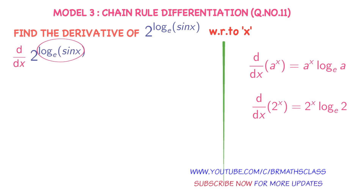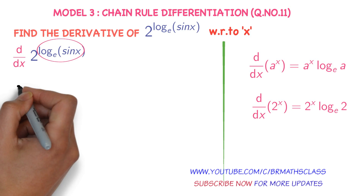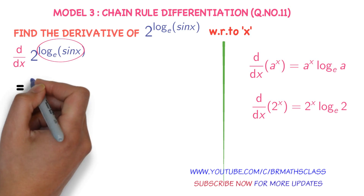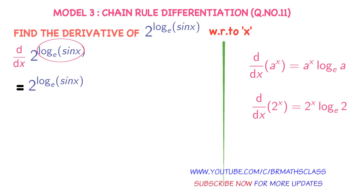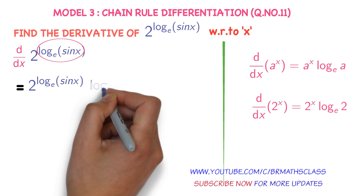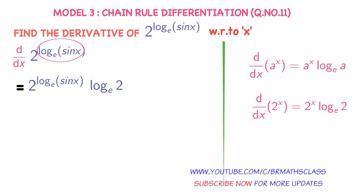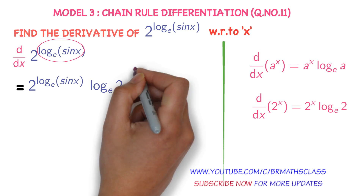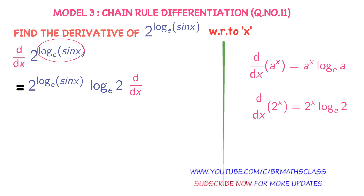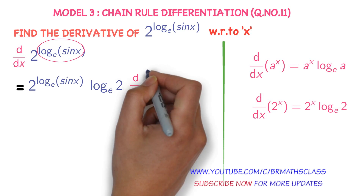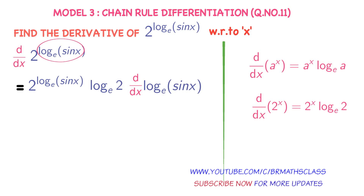Therefore, the derivative of 2 power logarithm of sine x base e is: 2 power logarithm of sine x base e, into log 2 base e, into the derivative of what you imagined as x — that is, the derivative of logarithm of sine x base e.